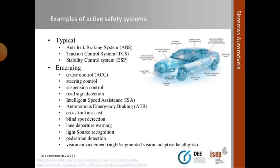In addition to basic active safety systems, there are also some emerging systems: cruise control, steering control, suspension control, road sign detection, intelligent speed assistant, autonomous emergency braking, cross traffic assistance, blind spot detection, lane departure warning, light source recognition, pedestrian detection, and vision enhancement. These are some examples of active safety systems.